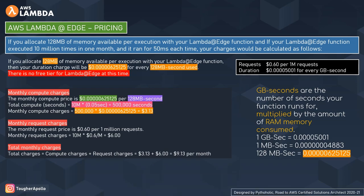If your Lambda at Edge function executes 10 million times in one month and runs for 50 milliseconds each time with 128 MB allocated, you will pay approximately $39.13 per month. You can go to the documentation to read about the pricing model for all other regions.